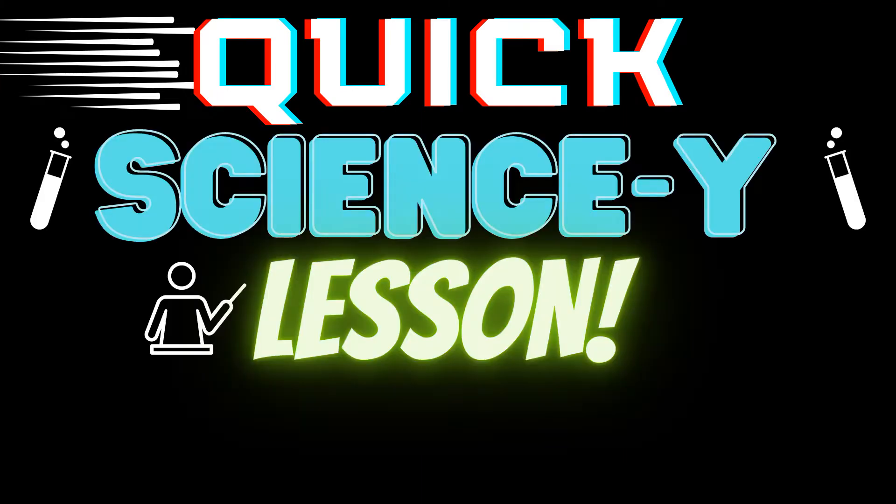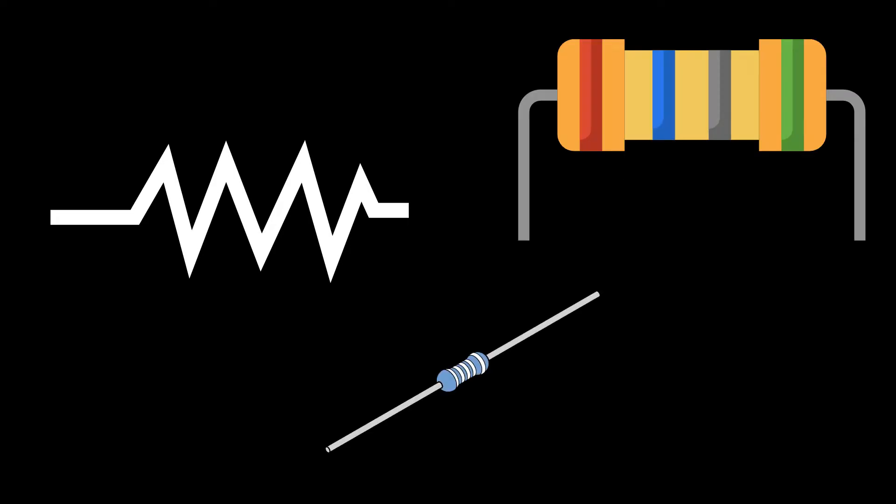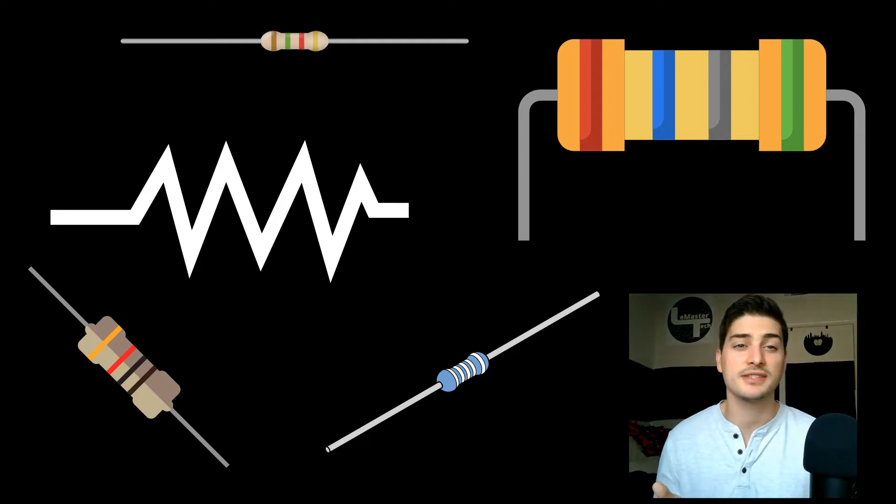Before we dive into the physical circuit build, we're going to take a look at a quick science-y lesson thing. So one of the very most common electrical components is a resistor. Virtually every electrical circuit that does anything useful or interesting needs a lot of these. But if you know what resistor you need, how do you know that you have the right resistor? The numbers aren't exactly printed on them.